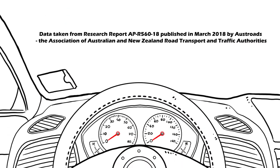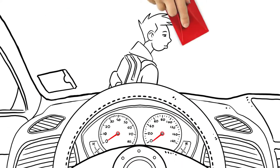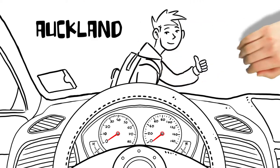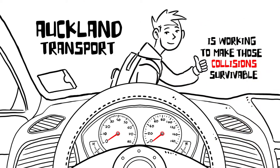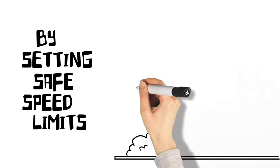Because we are human and we make mistakes, collisions will still happen. But we are working very hard to make these collisions survivable by setting safe speed limits. Because no death or serious injury should be acceptable.